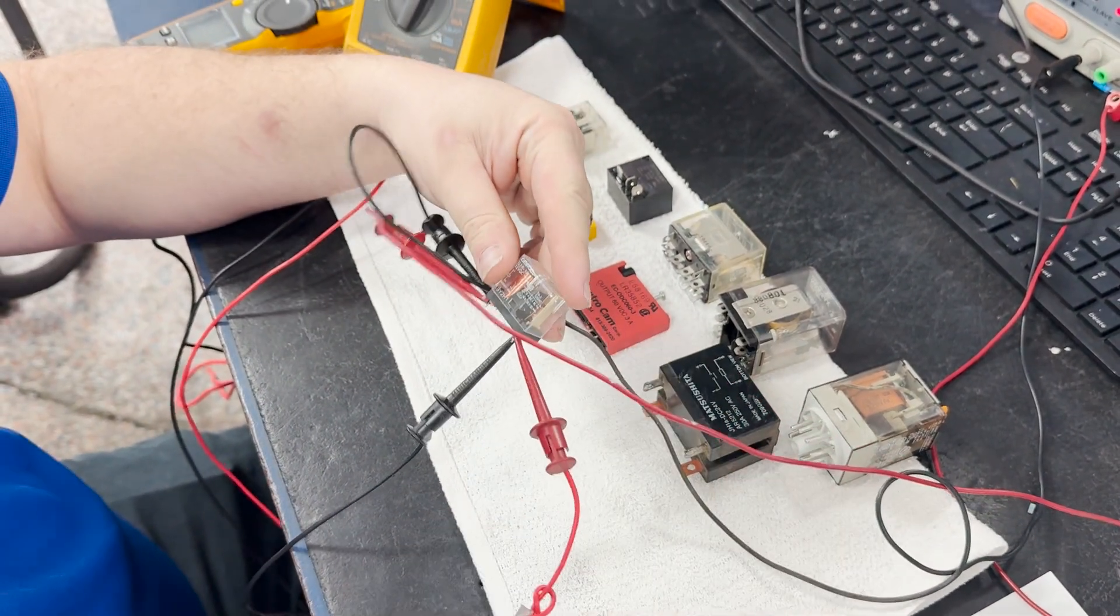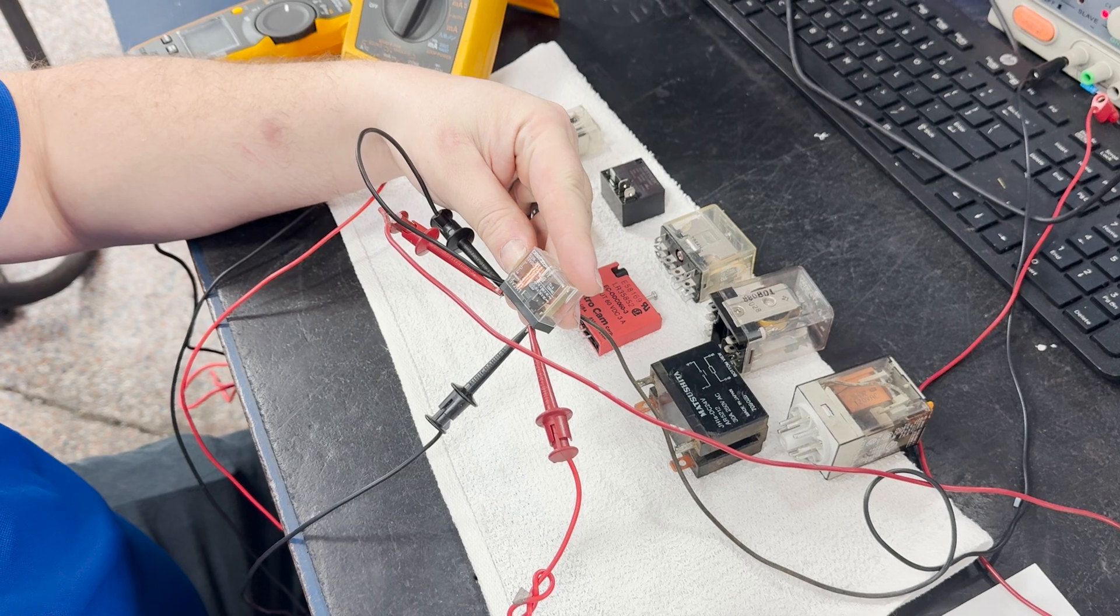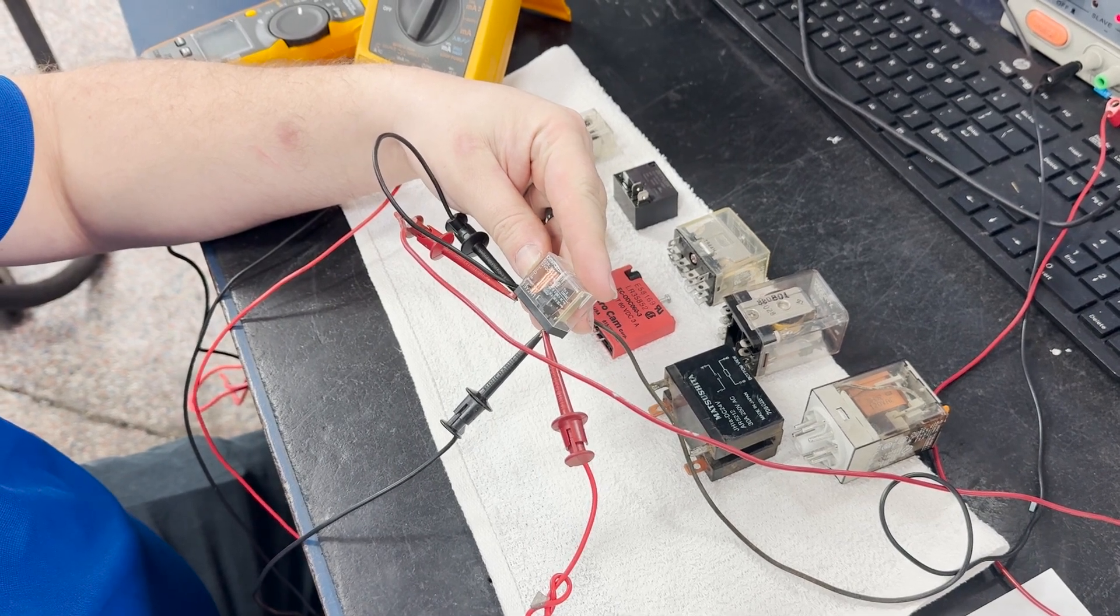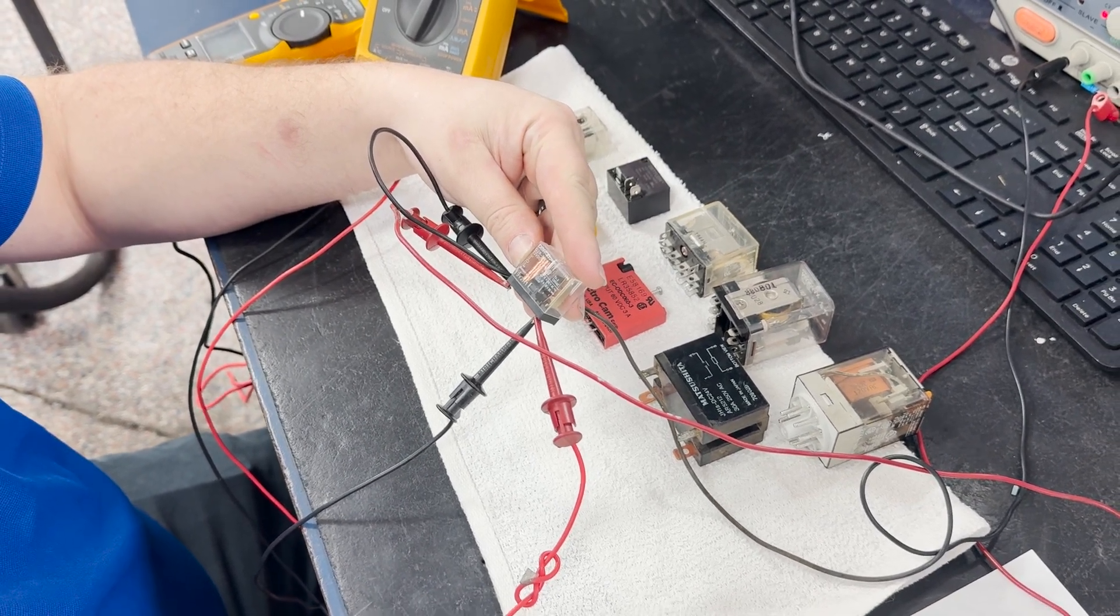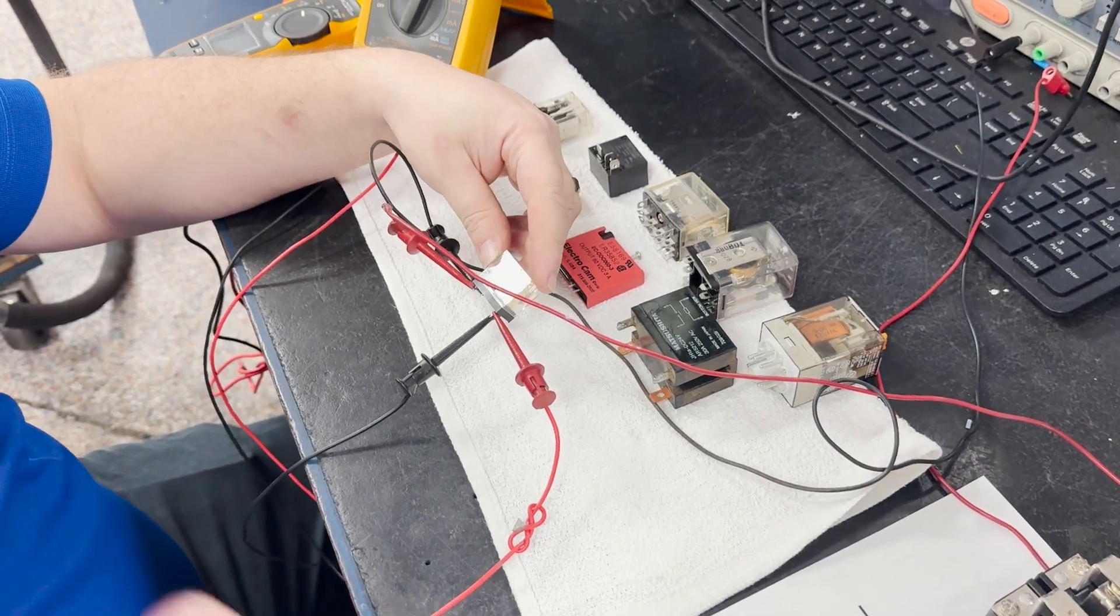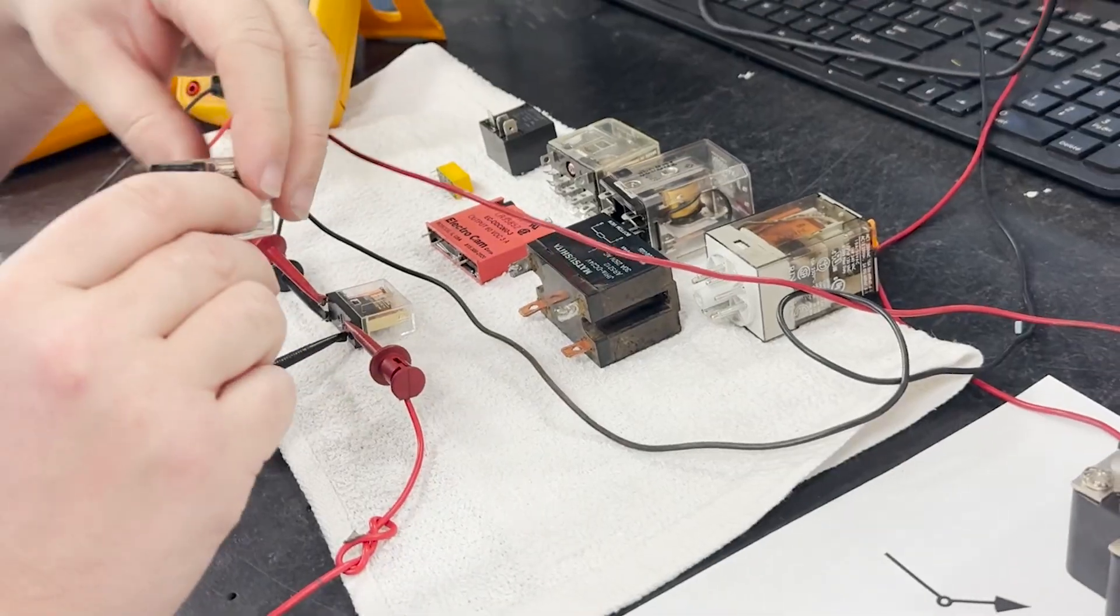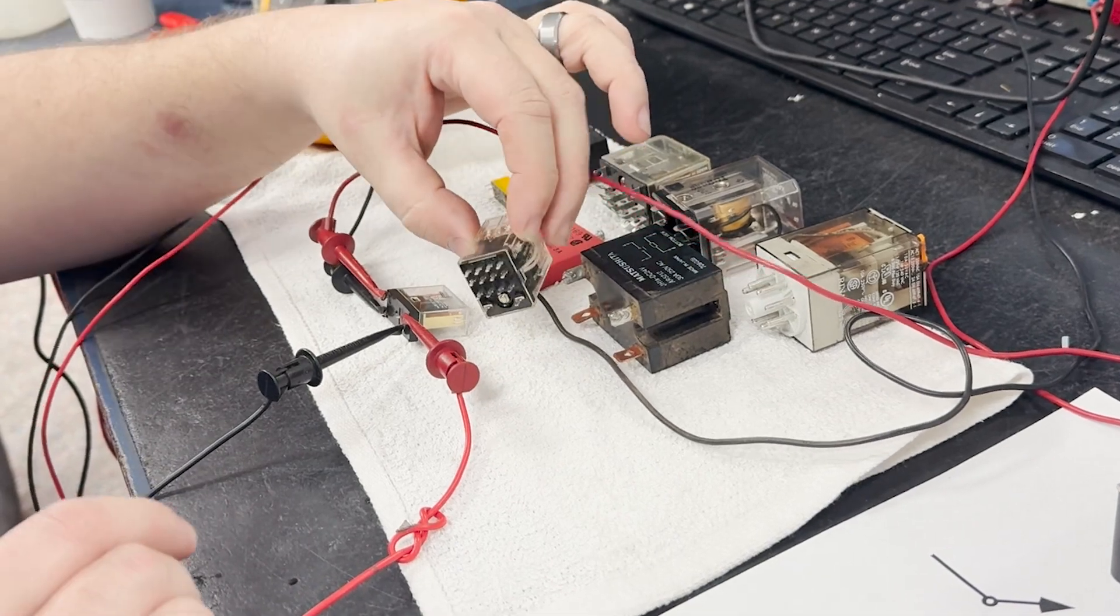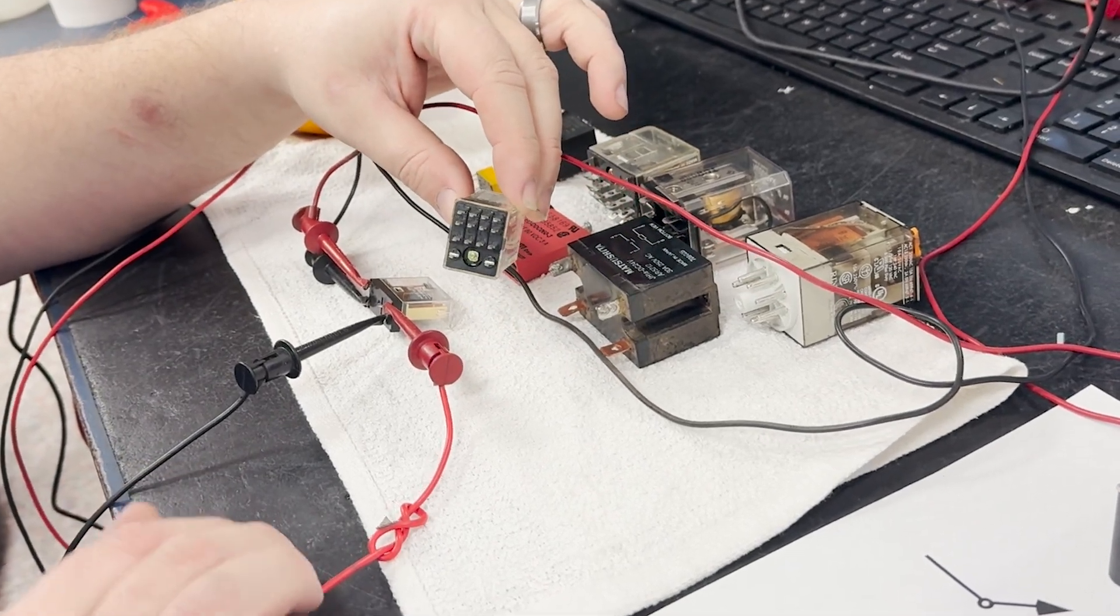It's a single pole single throw type, meaning it controls a single circuit and has only two positions: open and closed. So here we have our circuit. If it had multiple poles such as this, we could apply the current here to the coil and we can throw four poles.